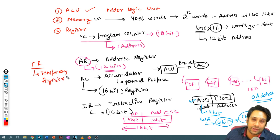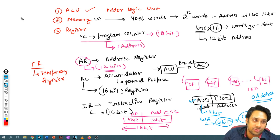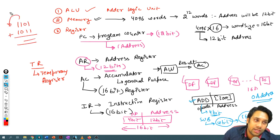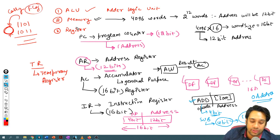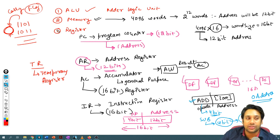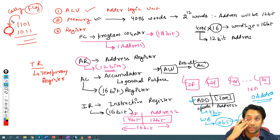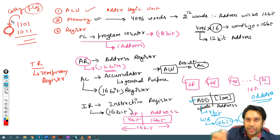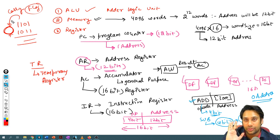The temporary register is used to store temporary data produced during calculations. For example, when adding 1101 with 1011, a carry is generated — you can use a flag for that carry. But sometimes extra temporary data is produced during calculations, and for that temporary data we use the temporary register.